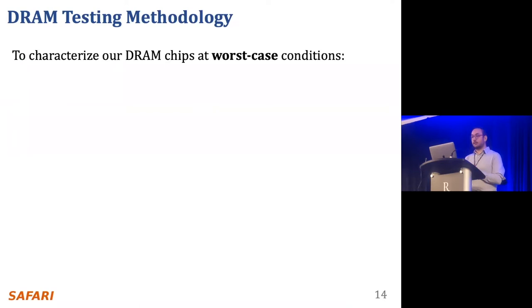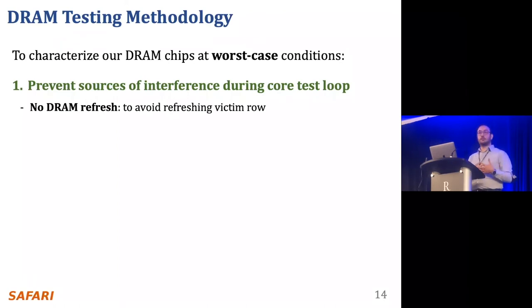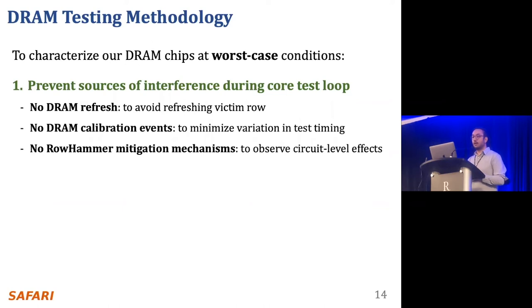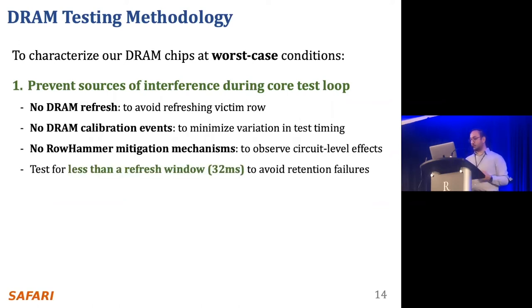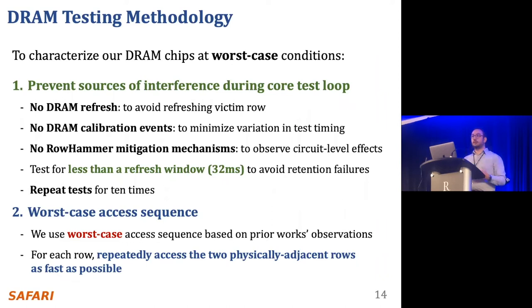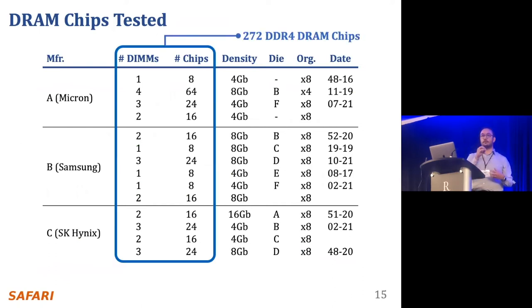With this infrastructure, we have fine-grained control over DRAM commands, timing parameters, temperature, and wordline voltage. To characterize DRAM chips in worst-case conditions, we minimize variation in test timing, disable all existing rowhammer mitigation mechanisms, perform rowhammer tests within a refresh window so data retention bit flips don't pollute results, and repeat tests multiple times to reduce noise. We use the worst-case access sequence from prior work: repeatedly accessing two physically adjacent rows as fast as possible. In this study, we test 272 real DDR4 DRAM chips from three major manufacturers implementing different densities, die revisions, and chip organizations.